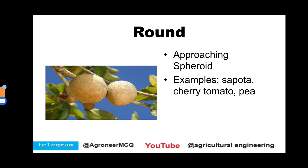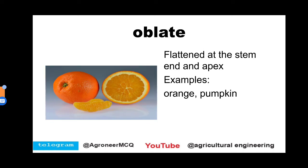Oblate shape is flattened at the stem end and apex. Examples of oblate shape are orange and pumpkin.